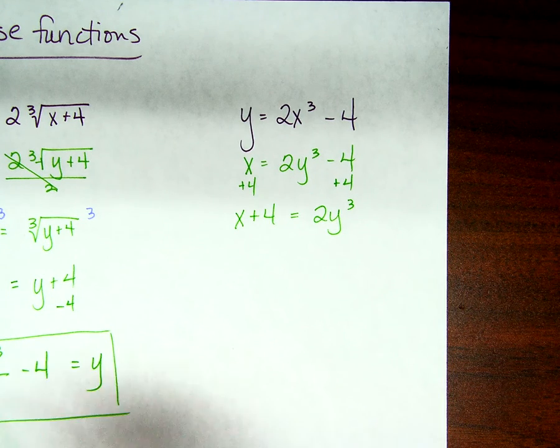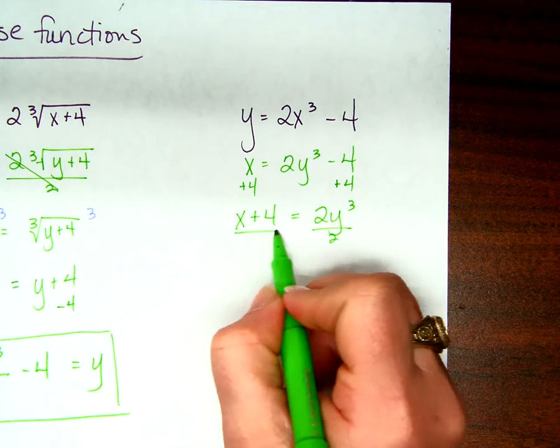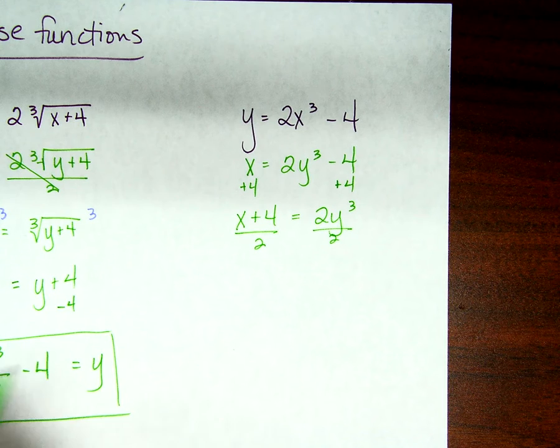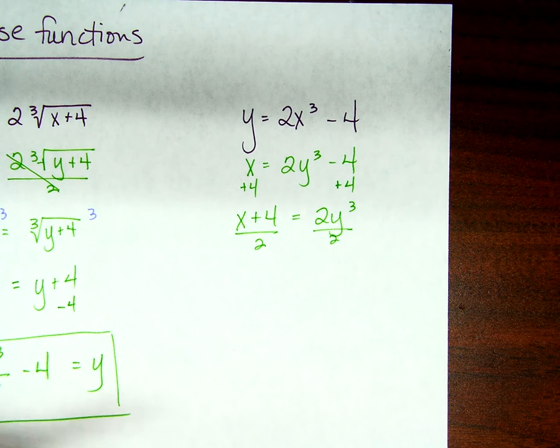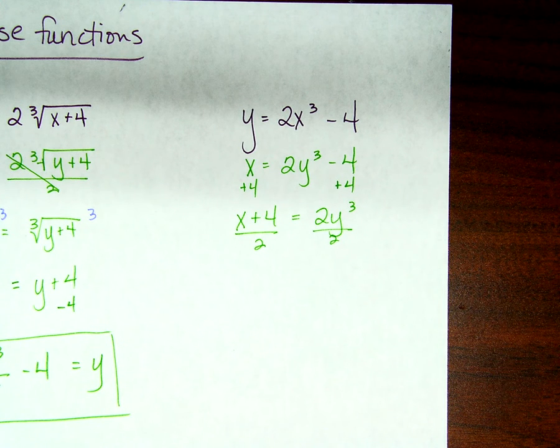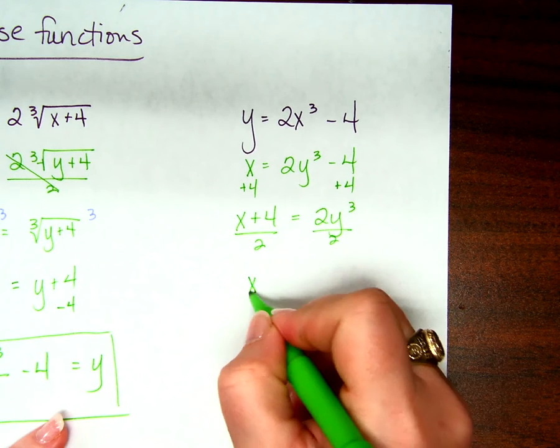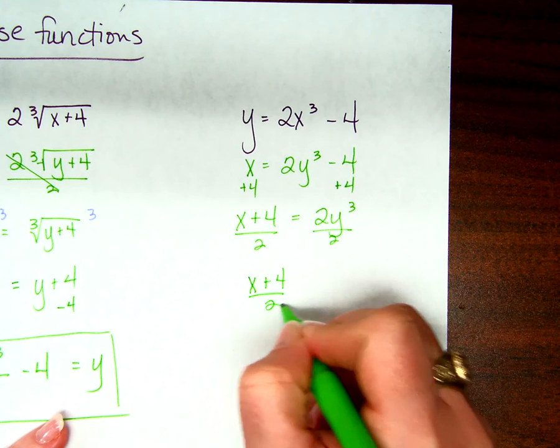And now, divide both sides by 2. How many different ways could we write the left-hand side? A lot, right? How do we want to go ahead and write it? Yeah, it's really up to you. Even your definition of the easiest way at this point is really up to you, okay? I'm just going to go ahead and leave it x plus 4 over 2 if you're okay with that.